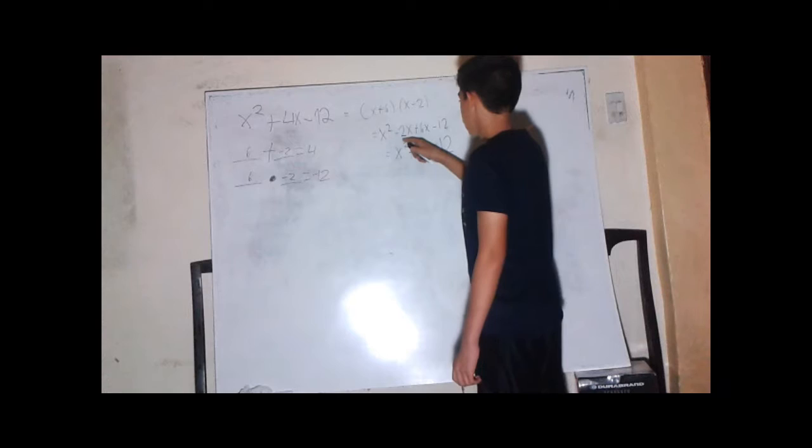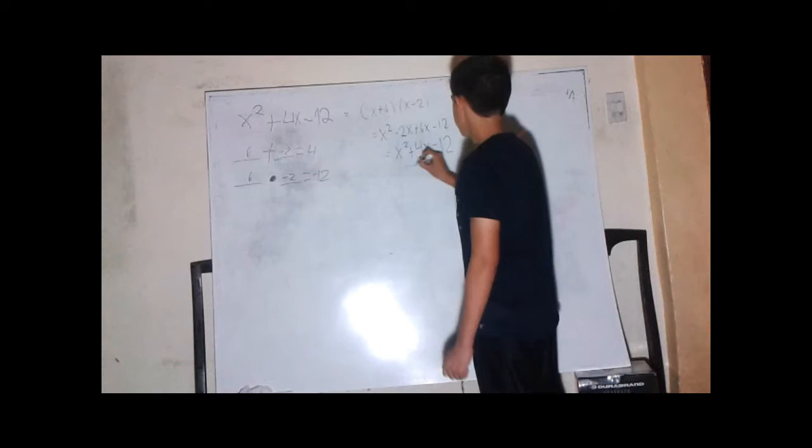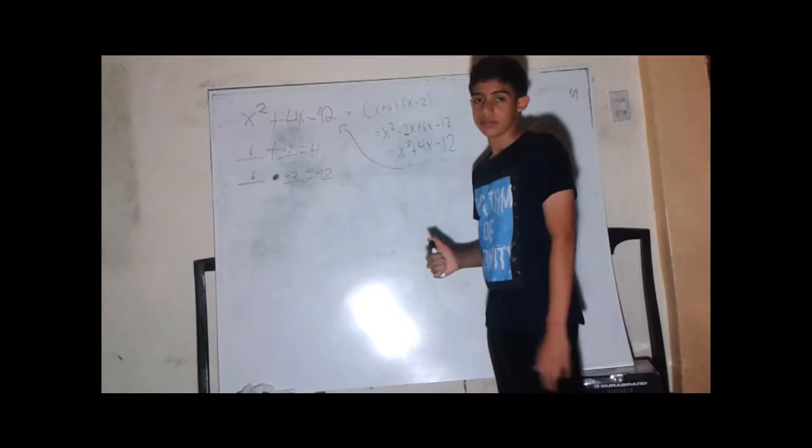Then we solve this addition. x² plus negative 2x plus 6x equals 4x minus 12. And this equals to this, which means it's correct.